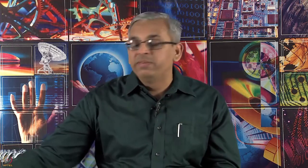Wilson's teacher Edward Waring gave this as a problem. He computed (p−1)! for several primes and noticed it is congruent to minus 1 mod p. As is common with teachers, Waring gave it as a problem to John Wilson to show that (p−1)! ≡ −1 mod p for every prime, but Wilson could not do it.